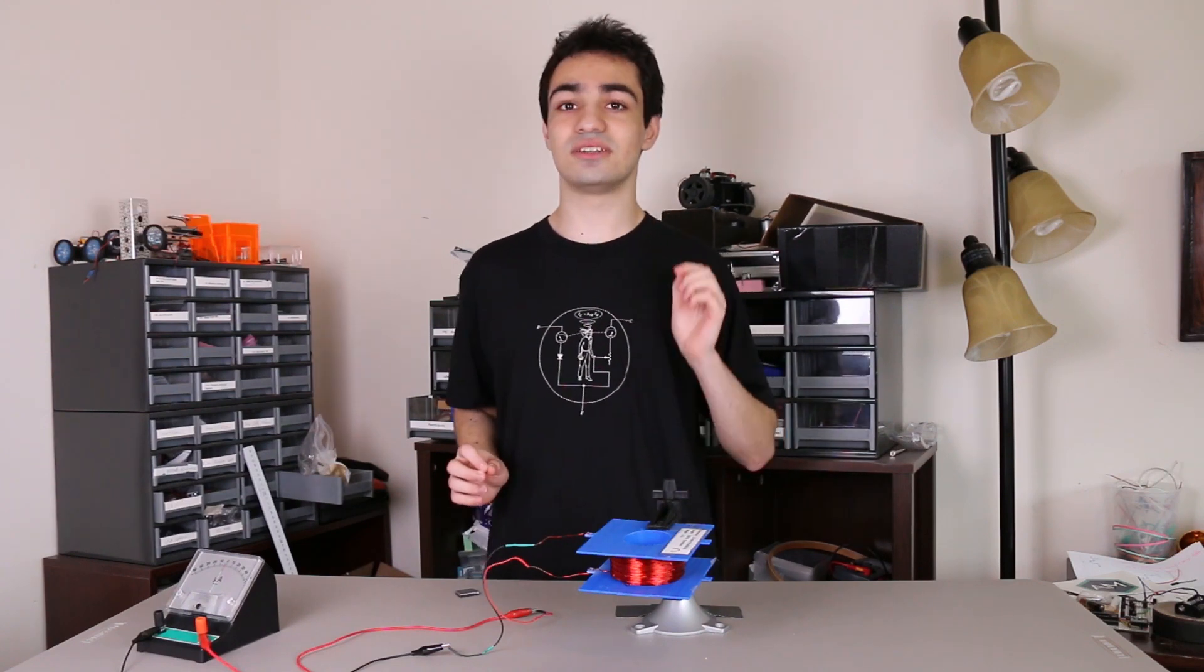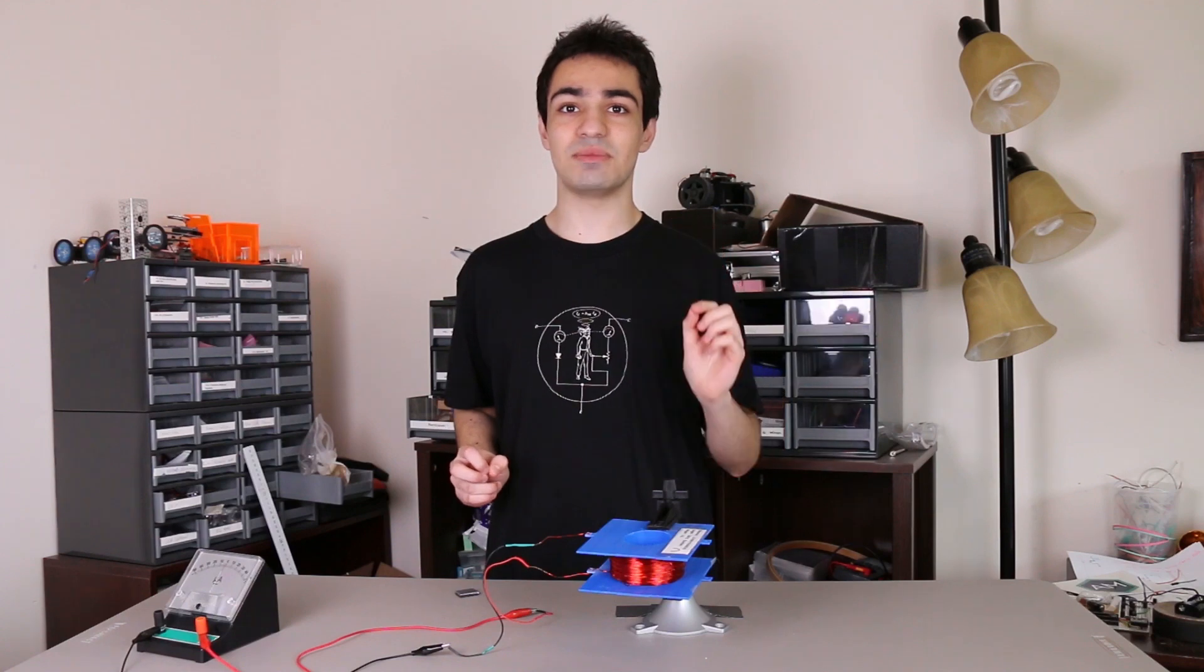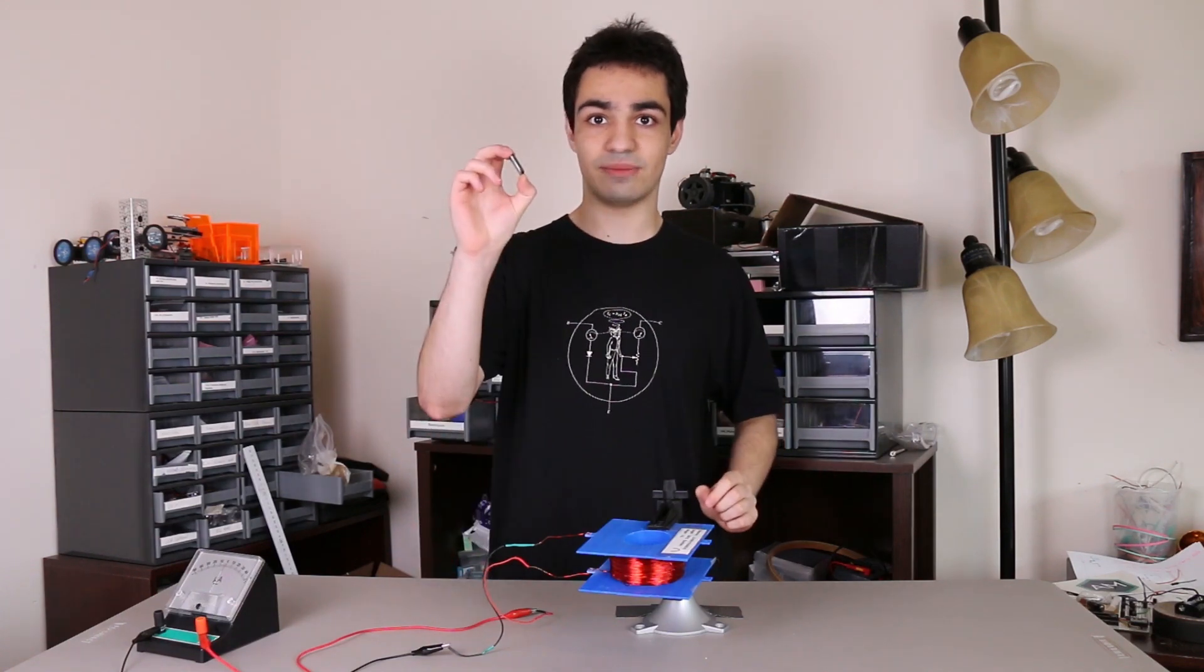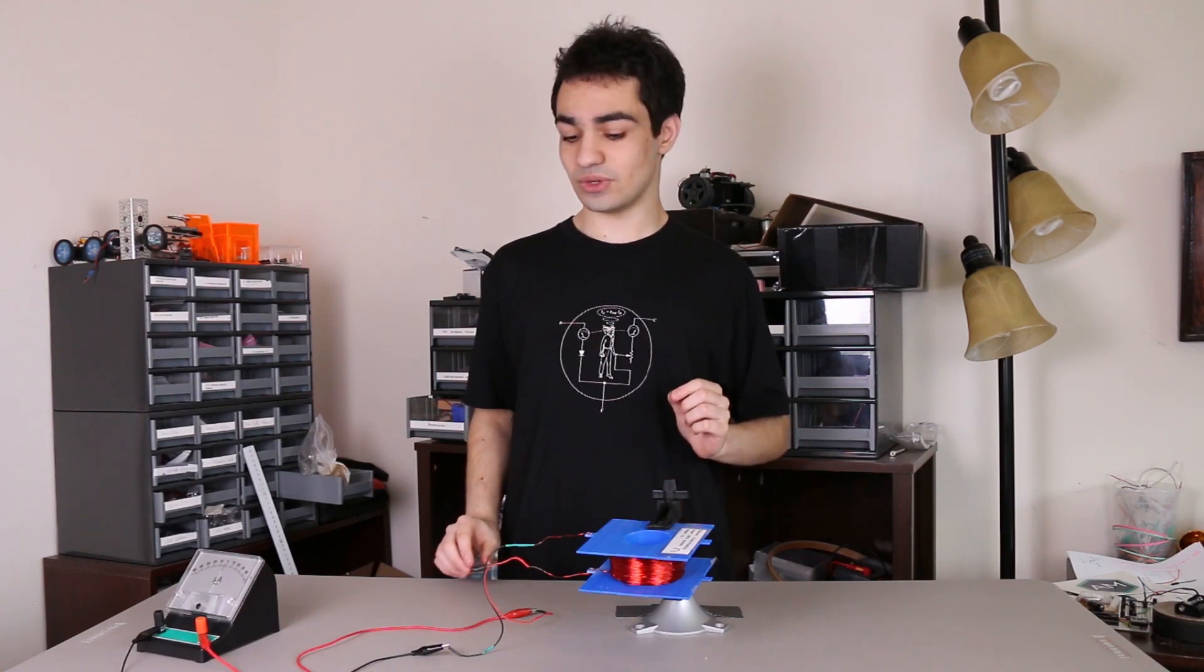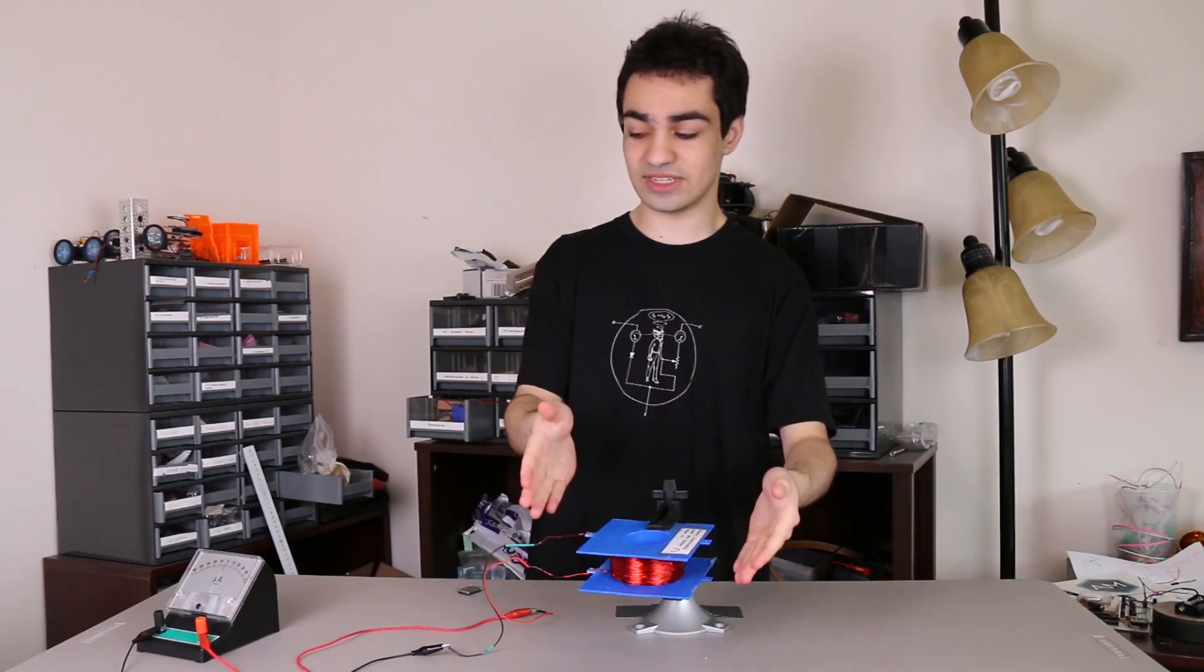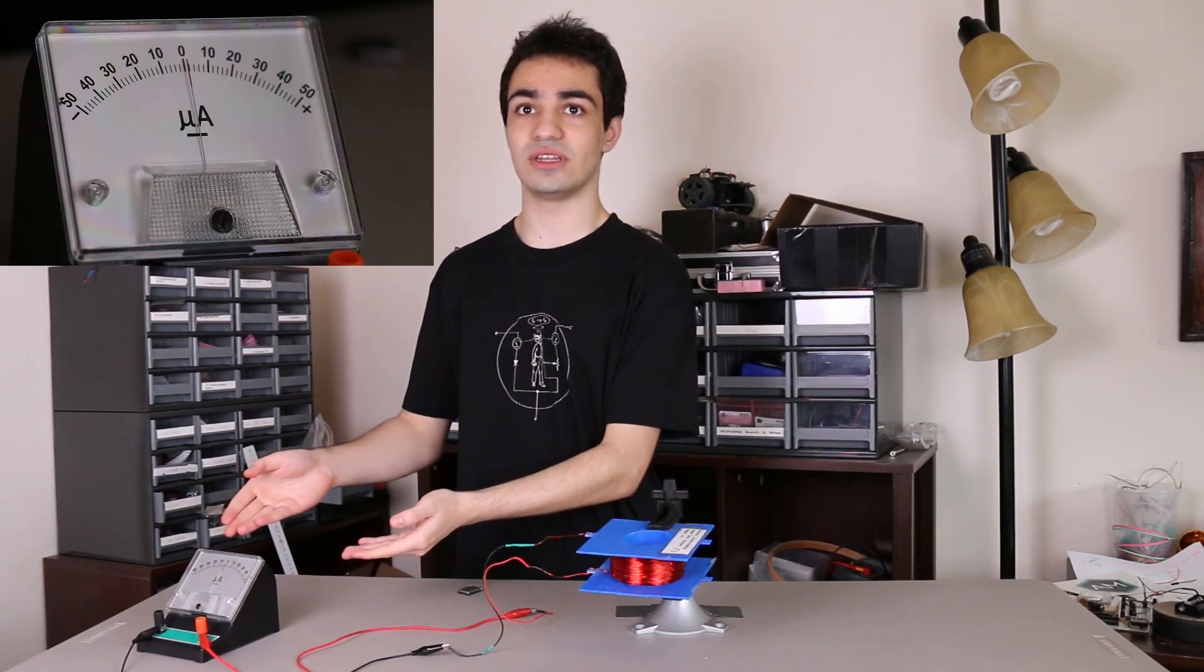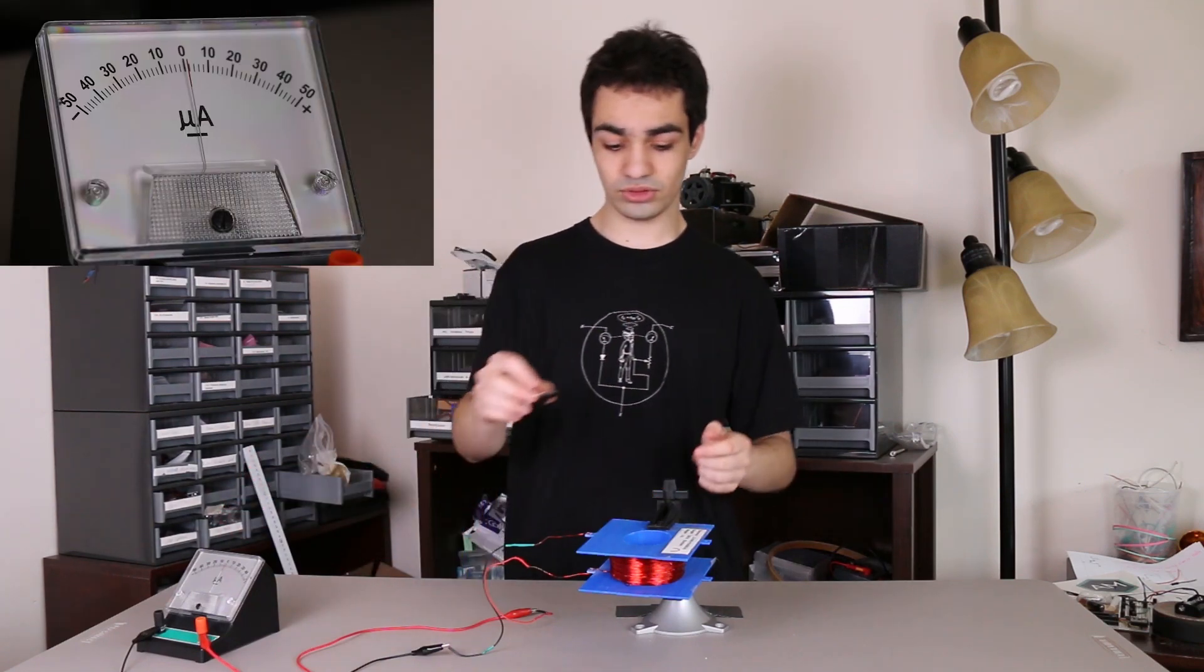So I decided to do Faraday's most famous experiment by shoving a magnet like this kitchen magnet here through a copper coil to induce current. So what I did was made my own coil as seen here and hooked it up to a galvanometer to measure the induced current when I drop a magnet through the loop.